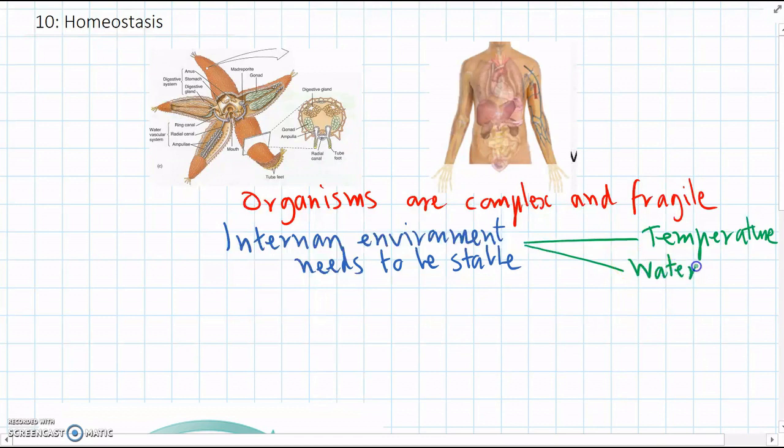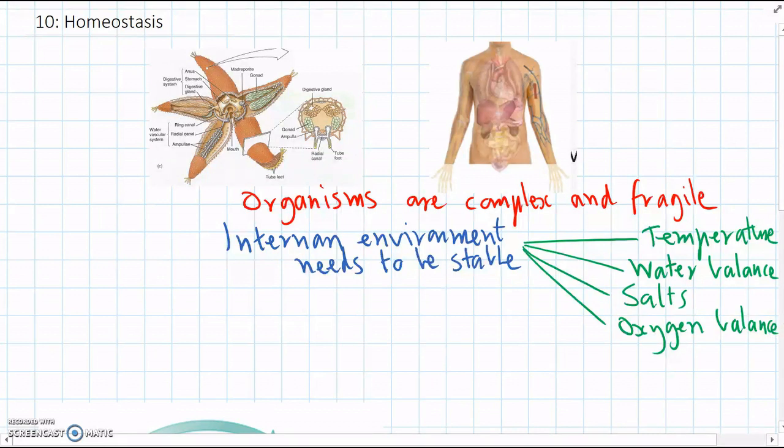Things like water balance, you can't have too much or too little water inside your body. And salts, there are lots of different salts that need to have the right concentration. And oxygen and carbon dioxide too. Cells need oxygen to survive, and we need to remove carbon dioxide as a waste.